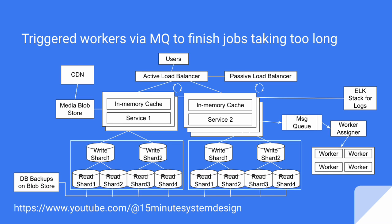In order to do this, we trigger another service to do the time-consuming job asynchronously. We publish an event to a message queue, which gets consumed by a worker assigner that assigns the job to workers depending on their running status. That's how we have scaled the entire service to handle 100 million users at scale.